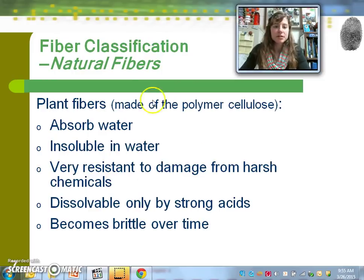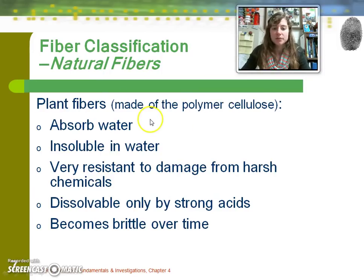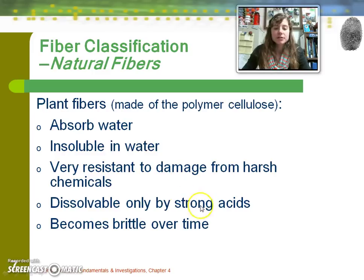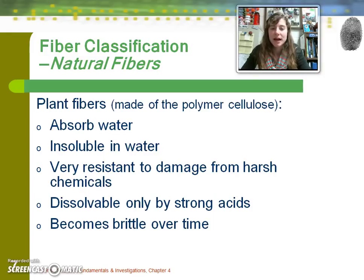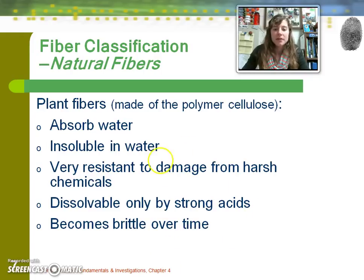Switching gears — still within natural fibers, those produced by plants have the characteristics of absorbing water, not dissolving in water, and being resistant to harsh chemicals. However, they can be dissolved by strong acids. A mentor teacher of mine spilled hydrochloric acid on her jeans in a college chemistry lab, walked home, and had a huge hole in her jeans by the time she got there. The jeans were probably cotton-based and dissolved in the acid. Plant-based fibers are made of the polymer cellulose, which makes up plant cell walls.